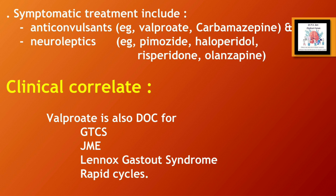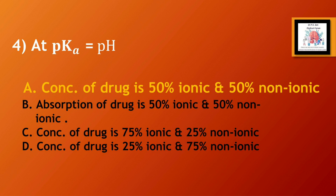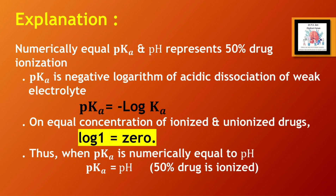Question number 4: at pKa equal to pH — Option A, concentration of drug is 50% ionic and 50% non-ionic; Option B, absorption of drug is 50% ionic and 50% non-ionic; Option C, concentration of drug is 75% ionic and 25% non-ionic; Option D, concentration of drug is 25% ionic and 75% non-ionic. The correct answer is Option A: concentration of drug is 50% ionic and 50% non-ionic. When pKa and pH are numerically equal, this represents 50% drug ionization.